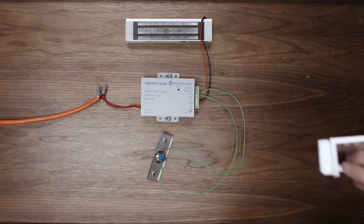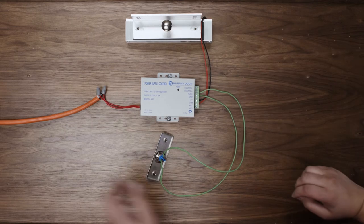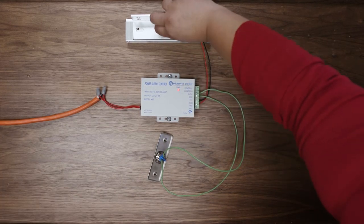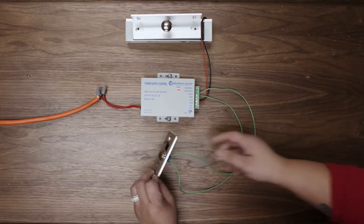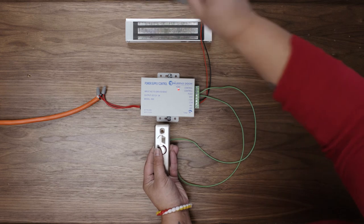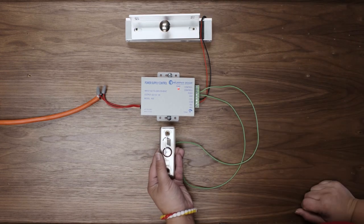Now test each pushbutton to make sure that it releases the magnet. The magnet should automatically lock when you turn on your power source. Press the button to release the lock and it should automatically re-engage after six seconds.